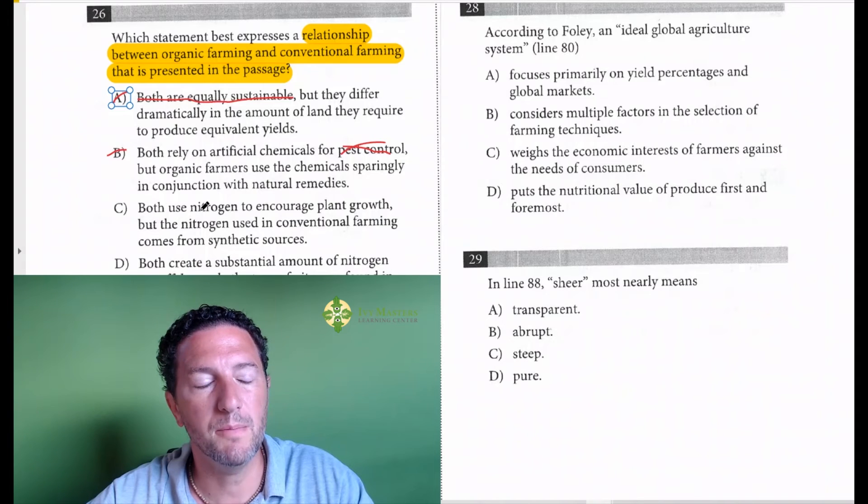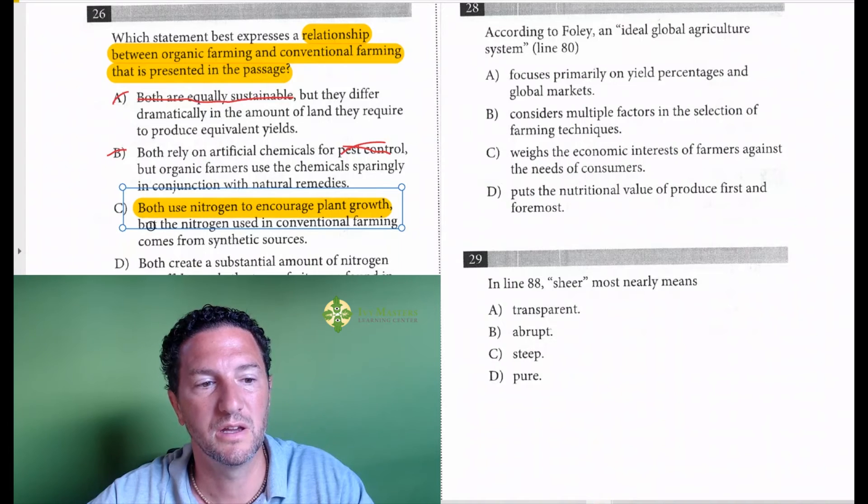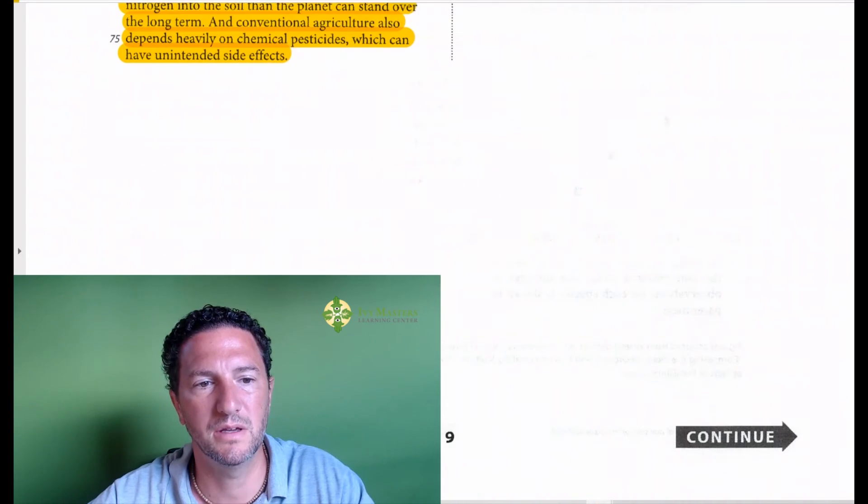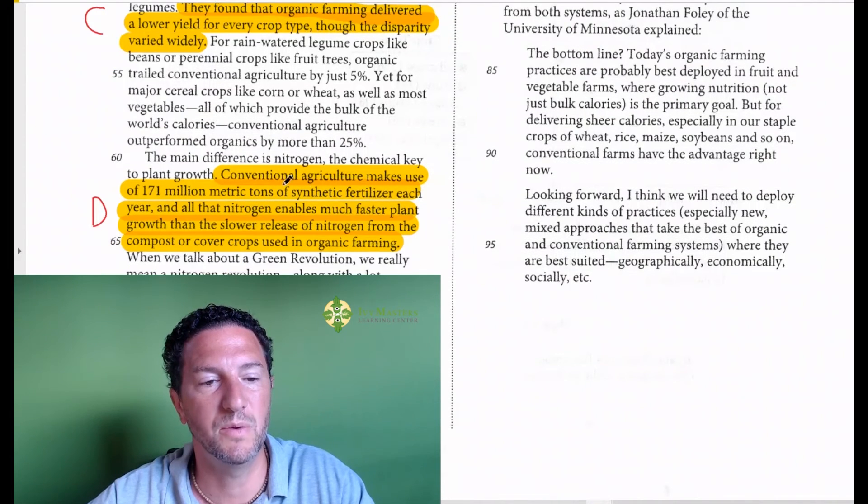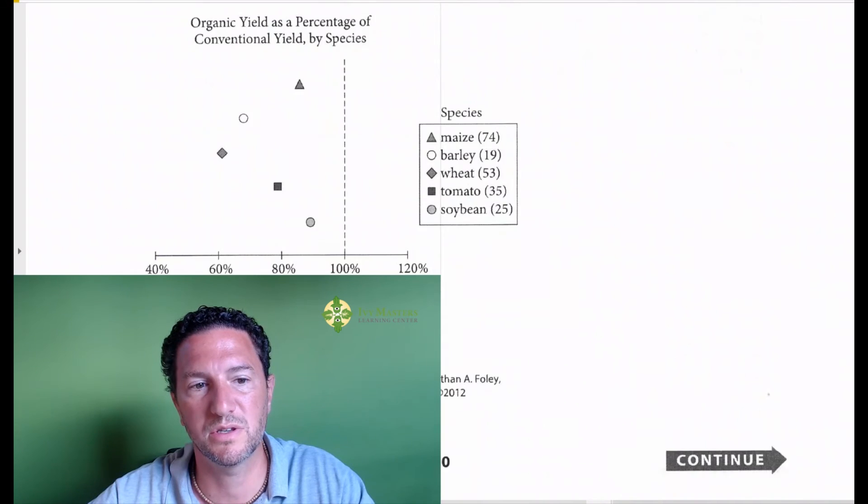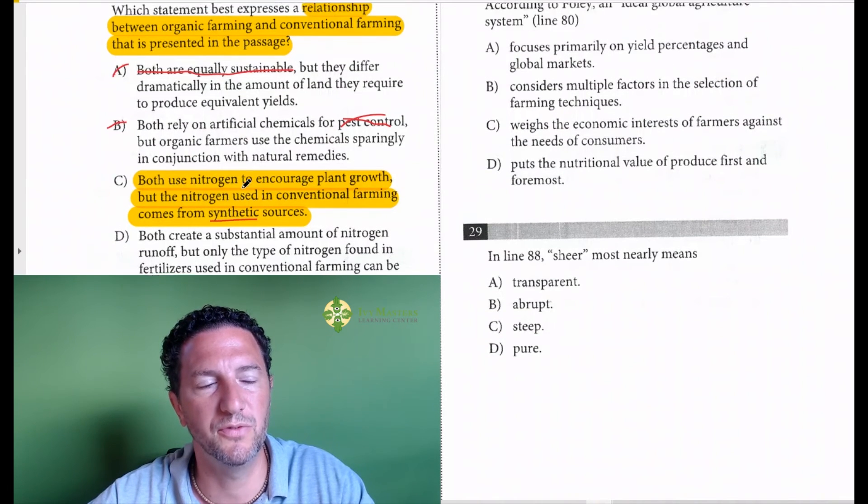Answer choice C: both use nitrogen to encourage plant growth, but the nitrogen used in conventional farming comes from synthetic sources. That actually looks like a good answer. Now, you might be unsure of what synthetic means. Basically it's not natural if it's synthetic. And we get that here: conventional agriculture makes use of 171 million metric tons, actually it uses the word synthetic, synthetic fertilizer each year. And all that nitrogen enables much faster plant growth than the slower release of nitrogen from the compost or cover crops using organic farming. Compost, cover crops, plants - that's natural stuff. So it looks like we've found our answer.